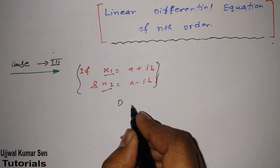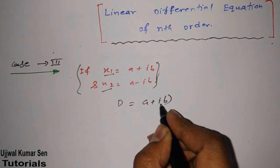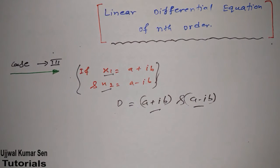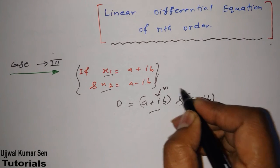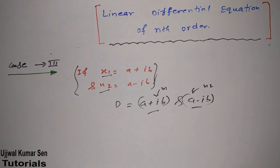Suppose that from the auxiliary equation we find out d is equal to a plus ib and a minus ib. So basically today in this case we are talking about: if we got imaginary roots, then what to do. So x1 is this and x2 is equal to this. That's why I have written x1 and x2 already. If we got this type of equation, then how to find out the general solution.